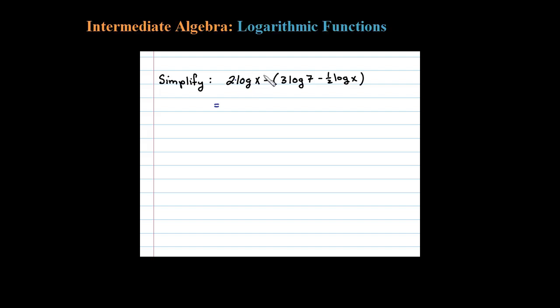So notice here I have a coefficient. Let's use the property that says I can write that as an exponent. Log of x squared. Notice they're all log. And when the base is not given it's assumed to be base 10.